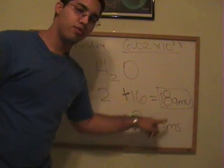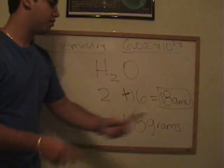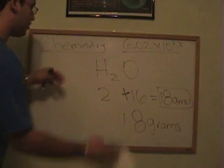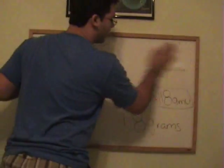This is why, in the periodic table, they don't write the units, because it could either be AMUs or it could be grams. Now, with this said, we're going to do some conversions.